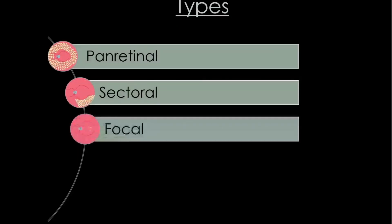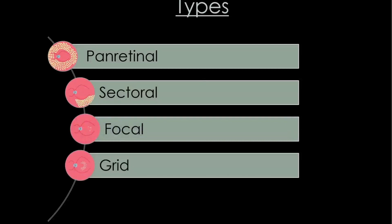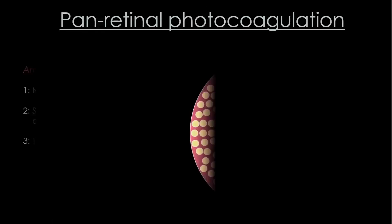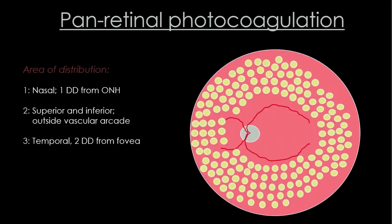We will be discussing the following types of lasers: panretinal, sectoral, focal, grid, and barrage. Starting with panretinal photocoagulation (PRP), it is commonly done in proliferative diabetic retinopathy and is performed in three sittings, in any order.